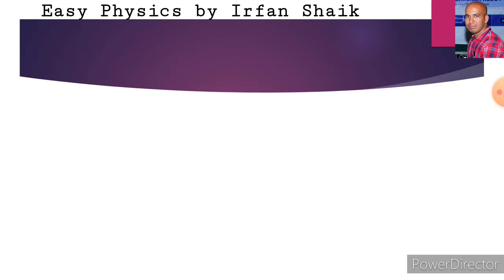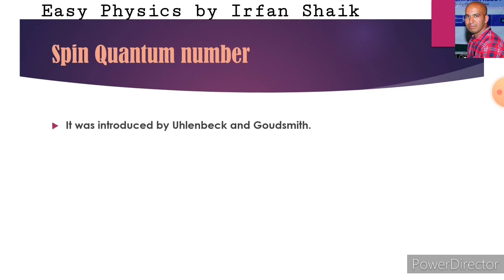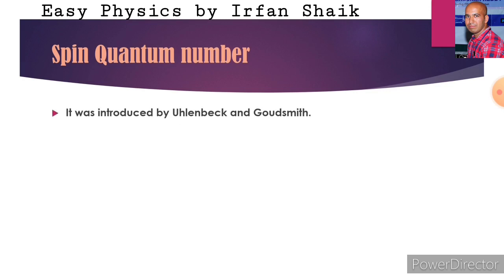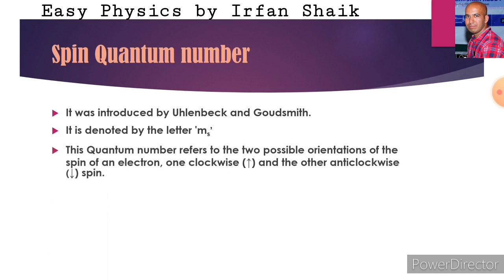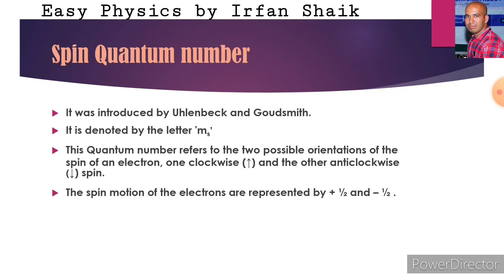Next, we move to another quantum number, that is spin quantum number. It was introduced by Uhlenbeck and Goudsmit. It is denoted by the letter ms. This quantum number refers to the two possible orientations of the spin of an electron. One is clockwise, denoted by an upward arrow, and the other is anticlockwise, denoted by a downward arrow. The spin motion of the electrons is represented by plus half and minus half. If it is in the clockwise direction, its value is plus half; if it is in the anticlockwise direction, its value is minus half.